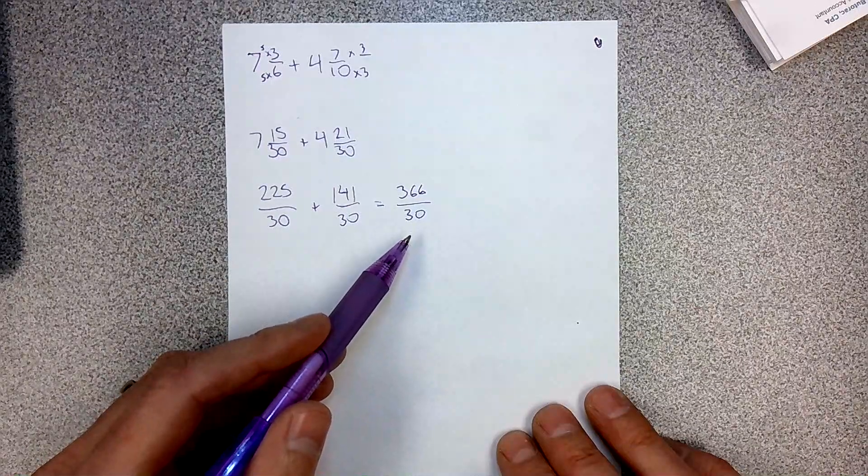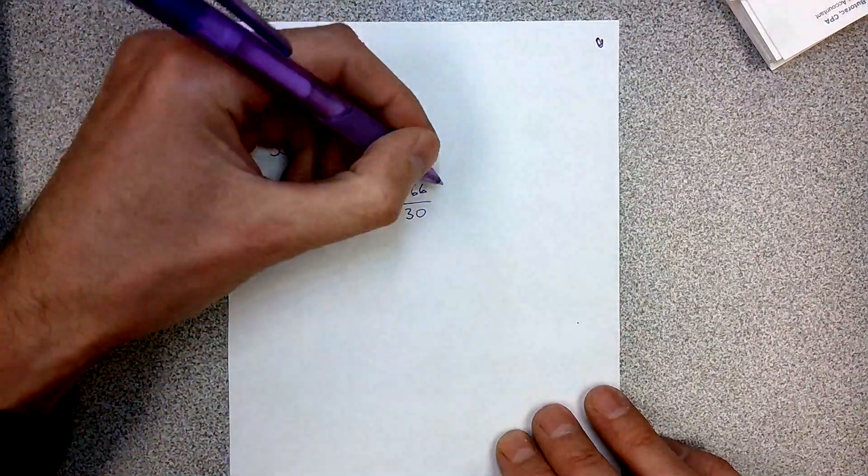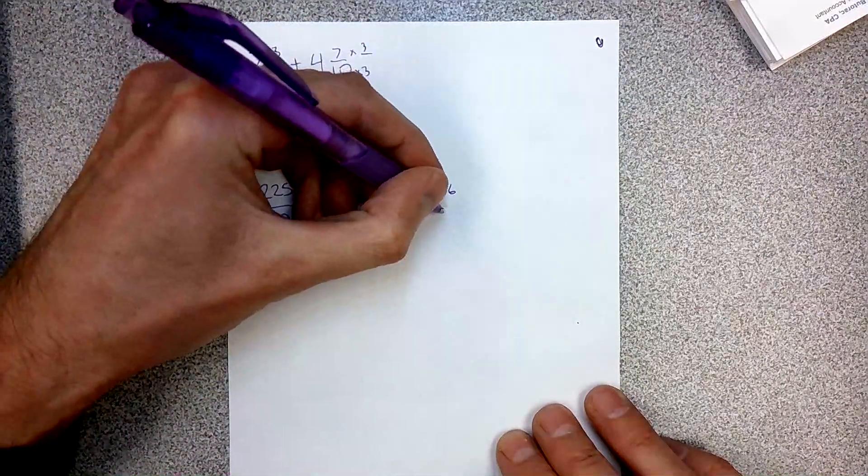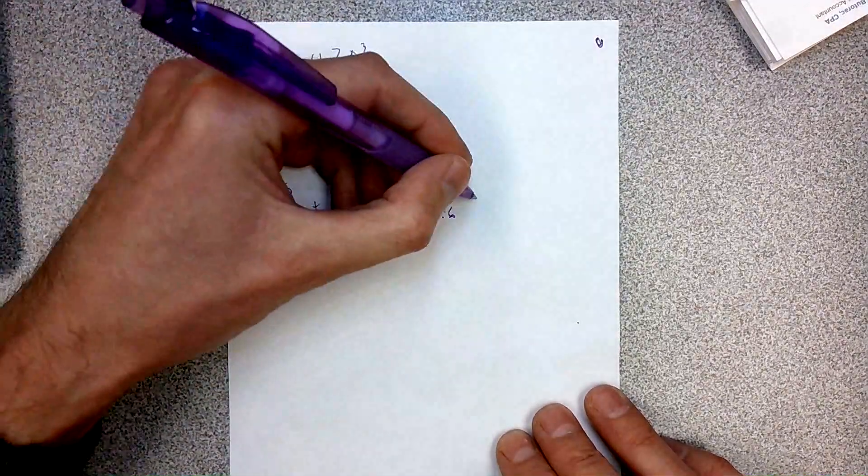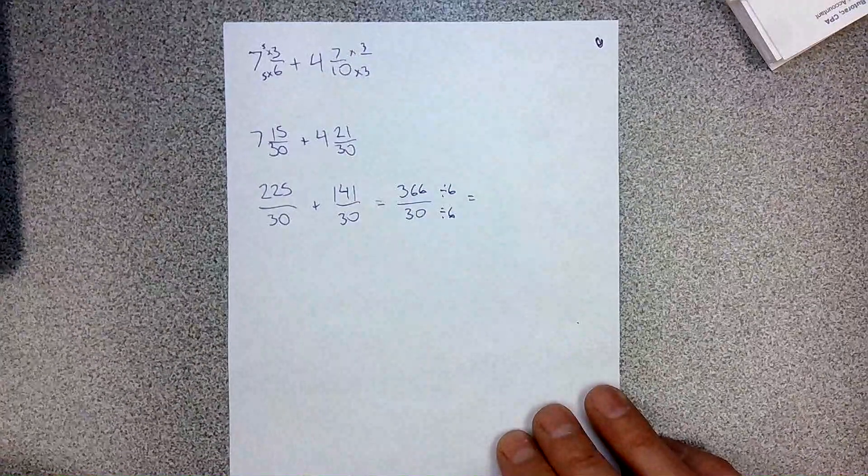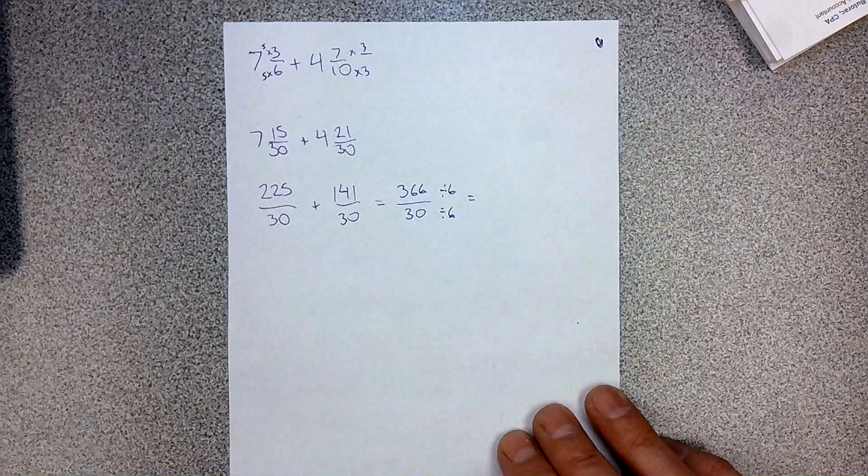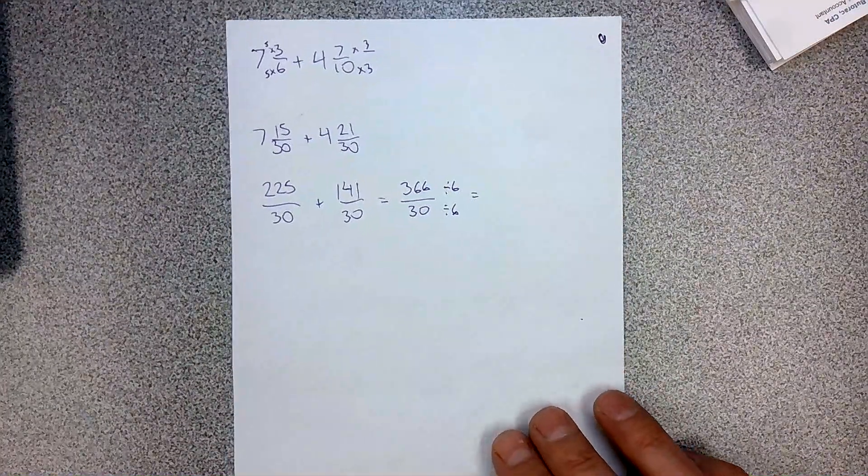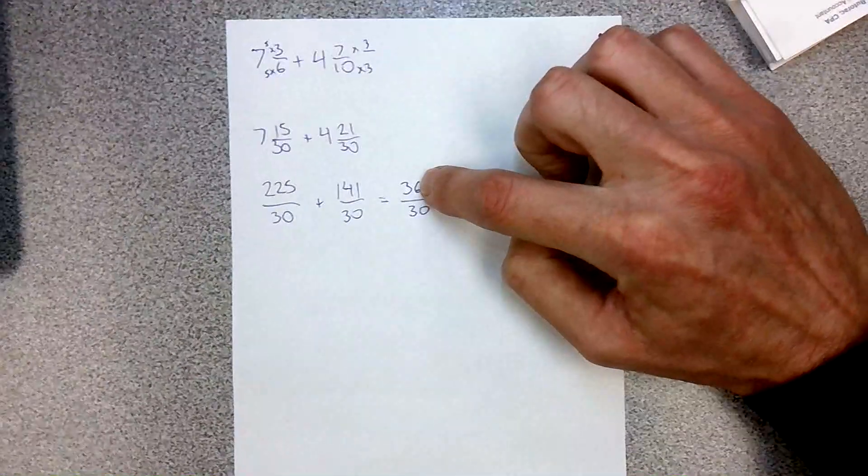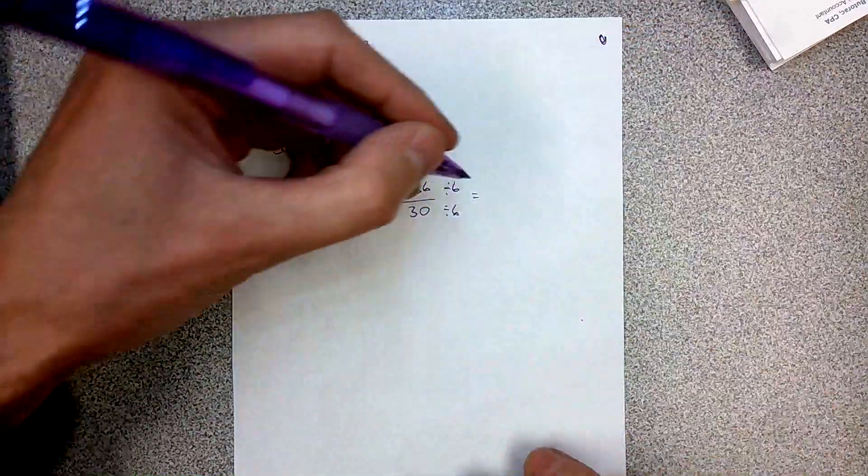So we can reduce this, we can simplify. I think we can divide them both by 6. You could divide them both by 3, you could divide them both by 2. But I'm going to divide them both by 6 because that will get me to the answer faster. The way I'm going to do this in my head, 36 divided by 6 is 6, and 6 divided by 6 is 1.